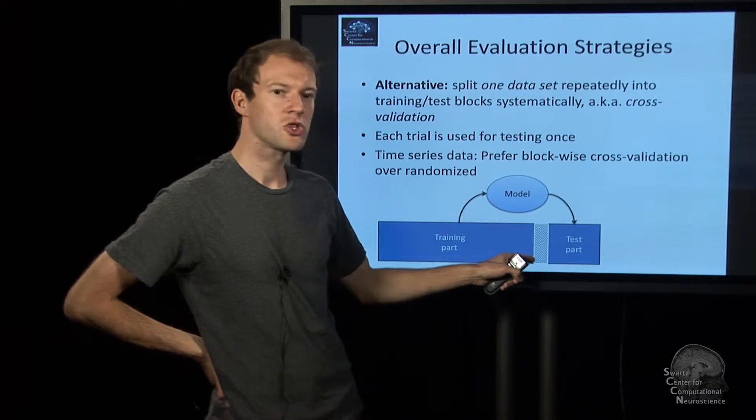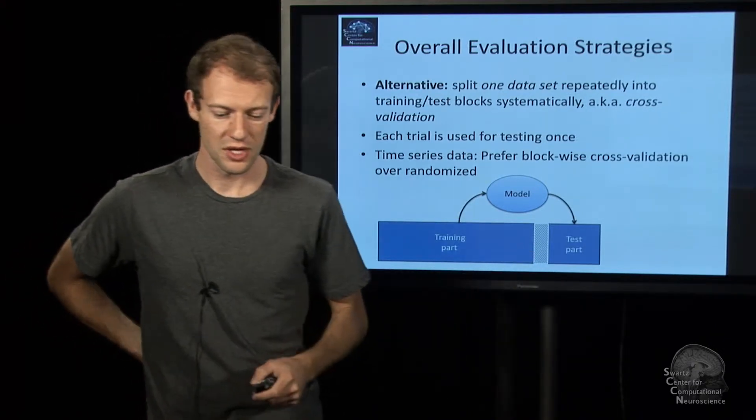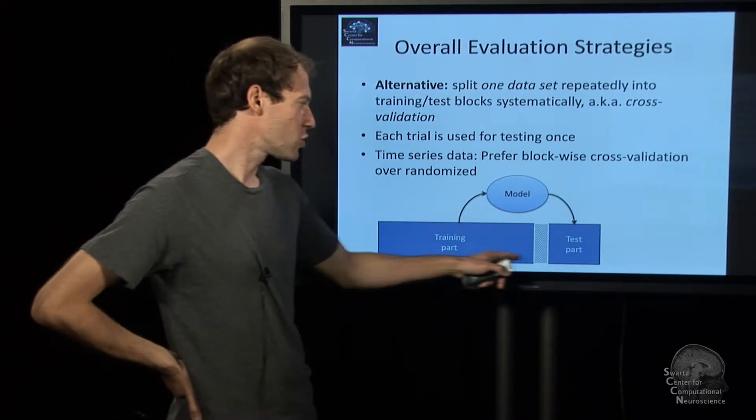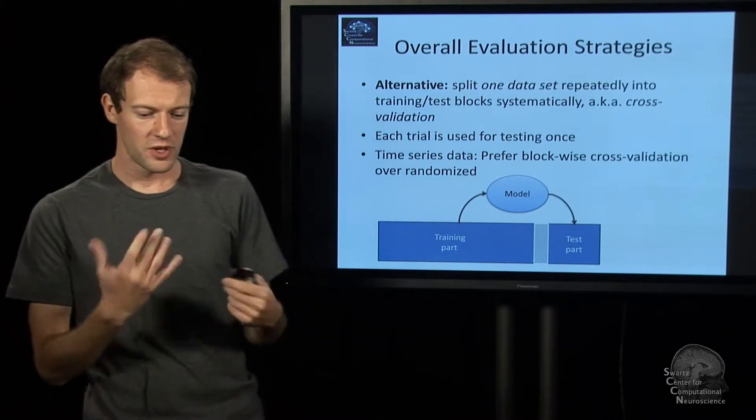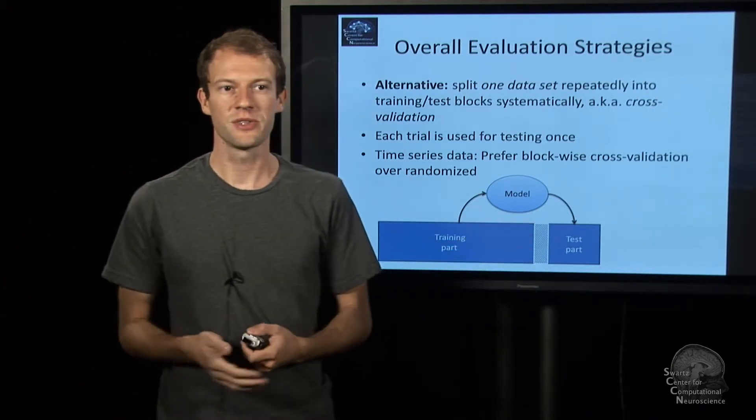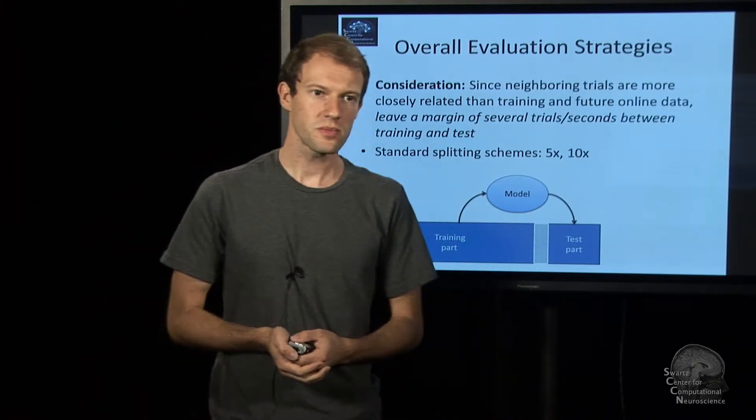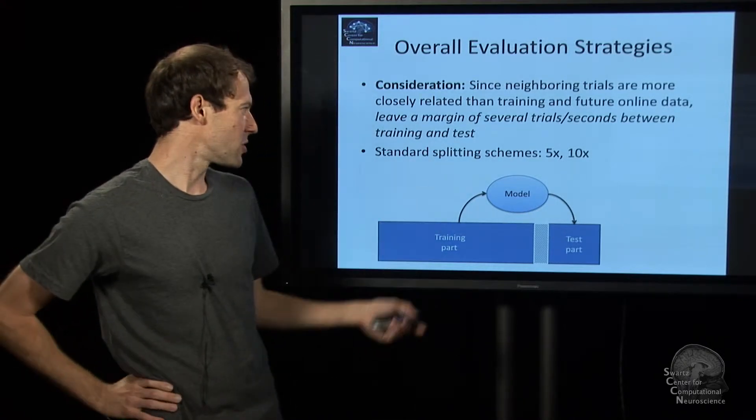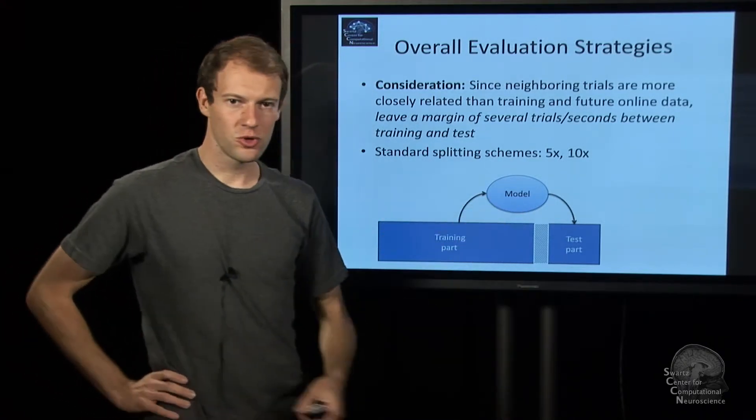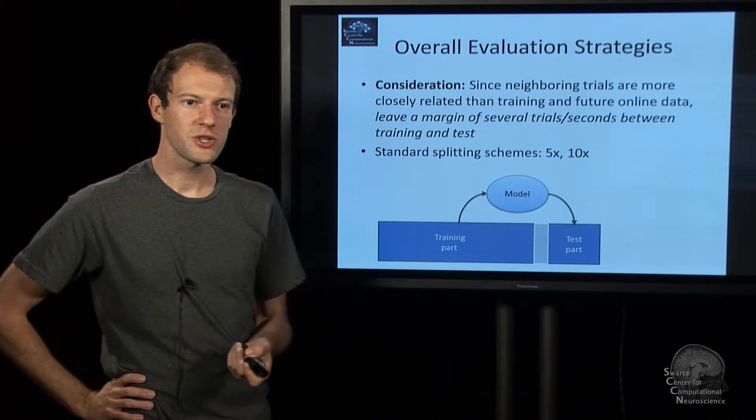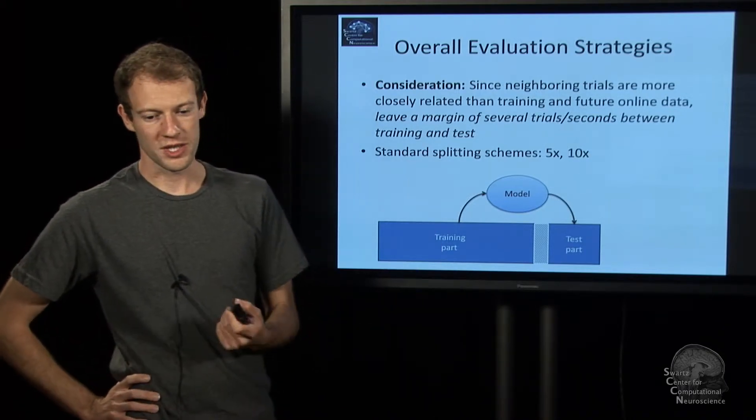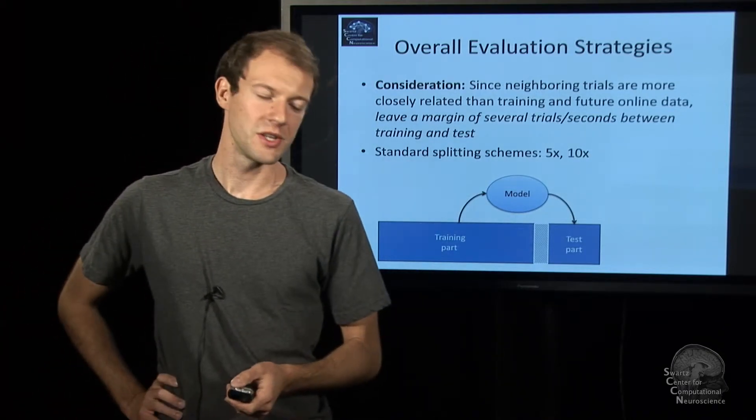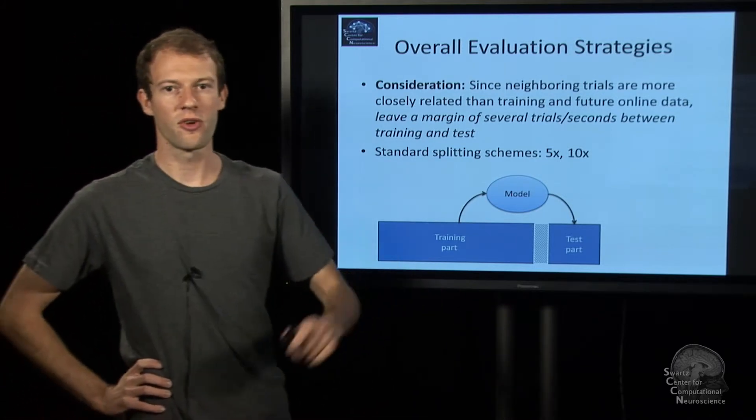And also, we tend to leave out a margin between training and test set of a few trials to really ensure that you're not testing on data that you've already seen before. So that's the margin topic. And usually, people do five-fold cross-validation, which means five splits, or tenfold. So these are the standard ways. There's not much reason to go far beyond that.